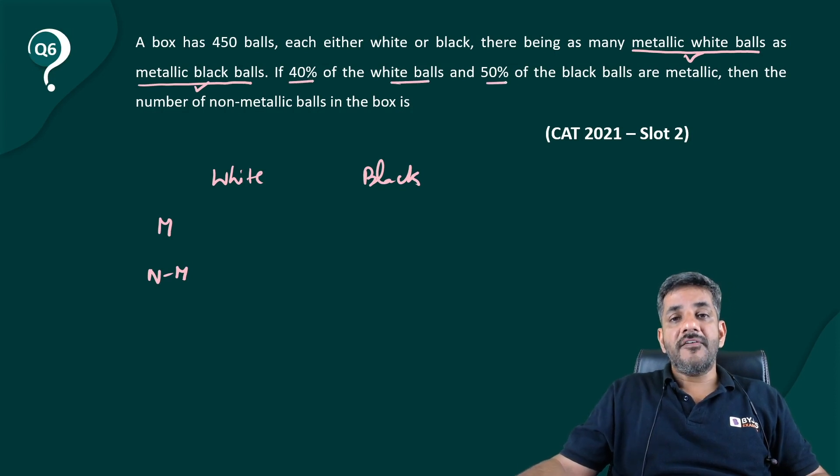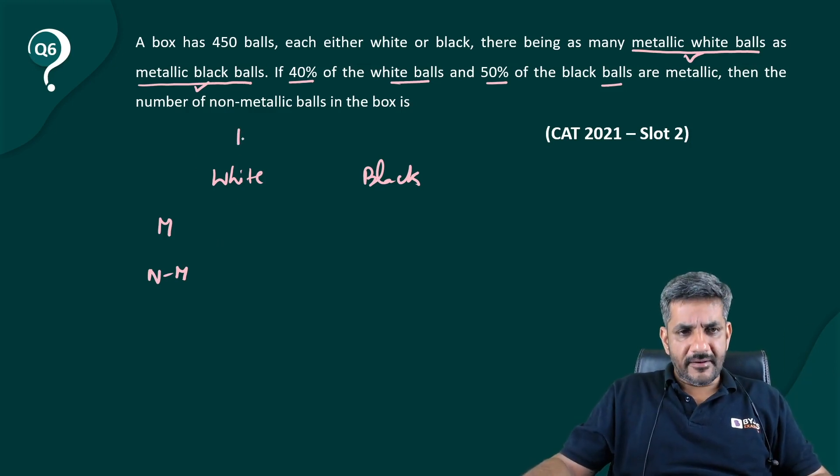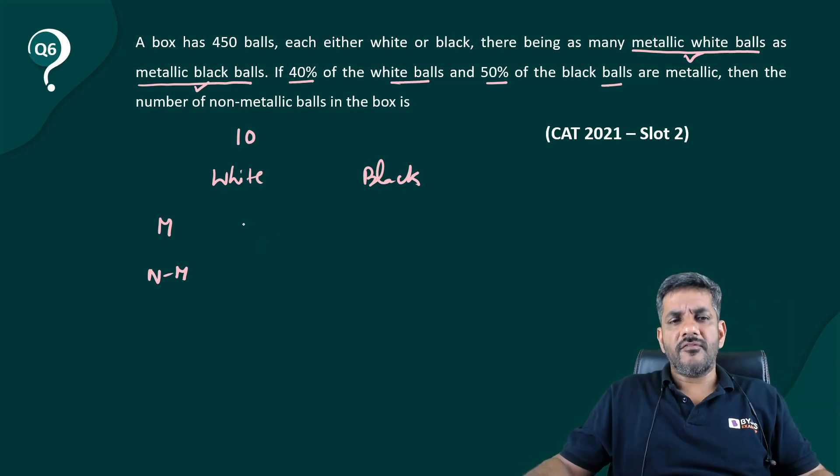white balls and 50% of black balls are metallic. Let's assume the number of white balls is 10. So 40% of them are metallic, that means four of them are metallic.